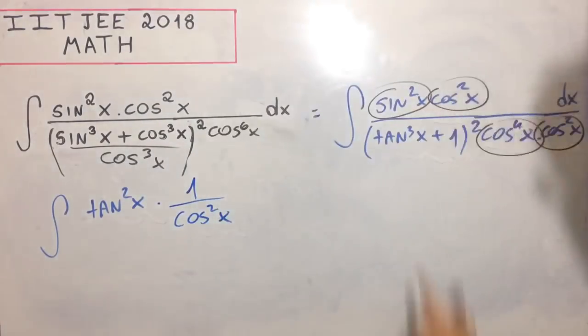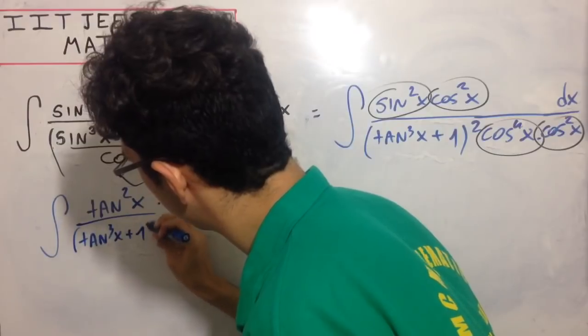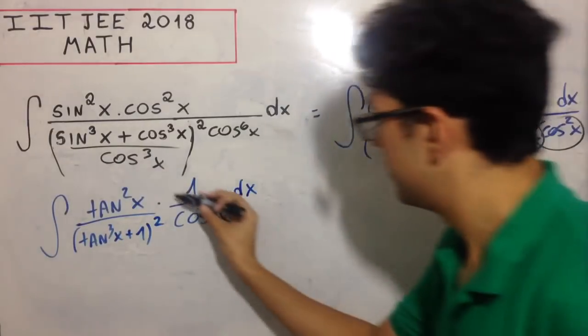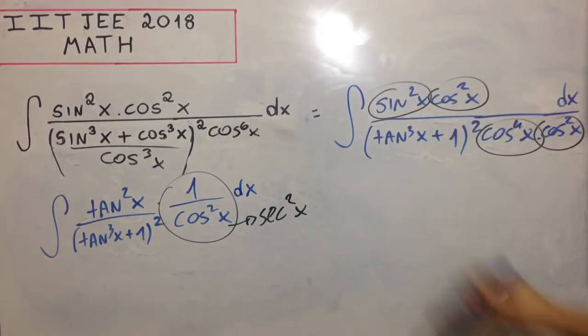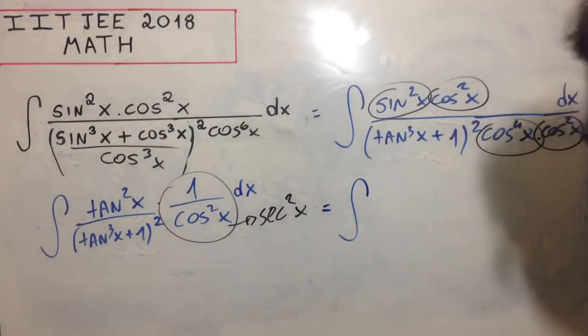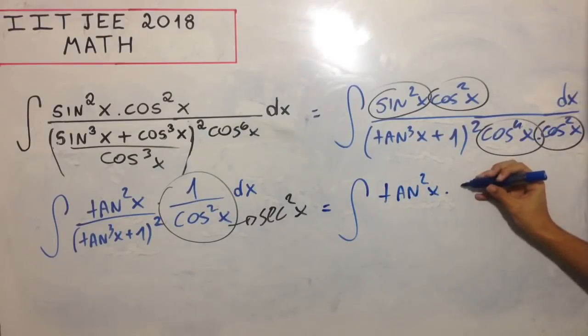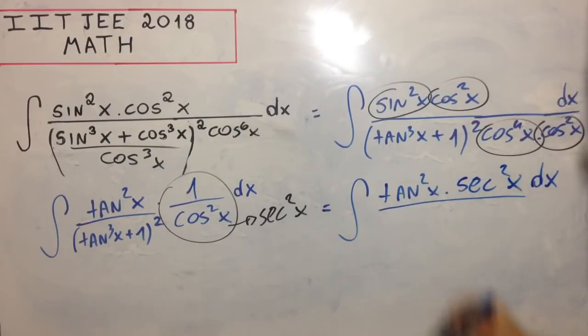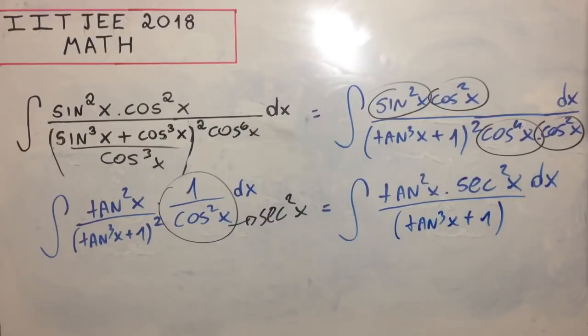Now, sin²x divided by cos²x equals tan²x, and one divided by cos²x equals sec²x. So this becomes the integral of tan²x sec²x dx.